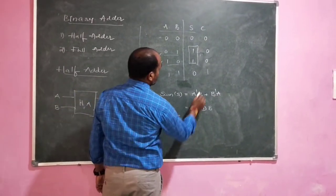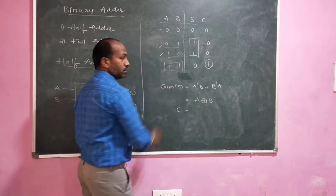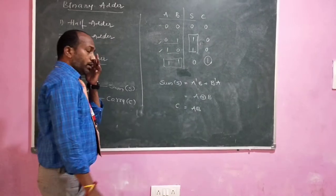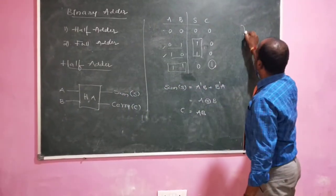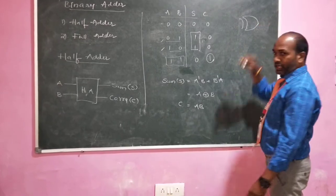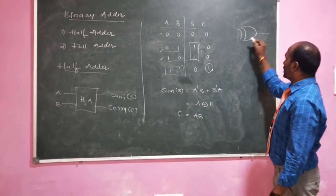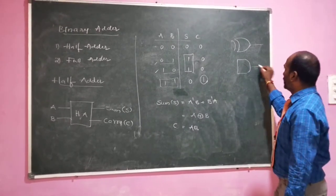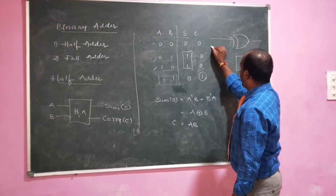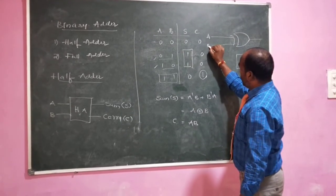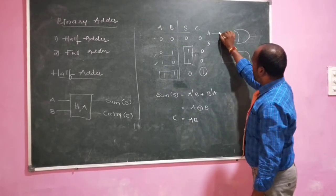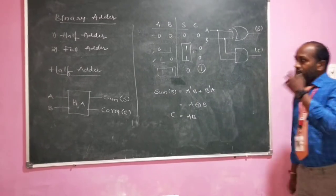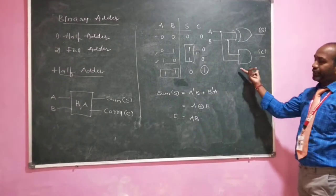Coming to the carry: since carry is 1 for only one combination — 1 and 1 — the equation is carry = A·B. The implementation of the half adder requires only two basic gates: one XOR gate and one AND gate. Using these two gates, A and B are supplied to the XOR gate to get sum, and to the AND gate to get carry.